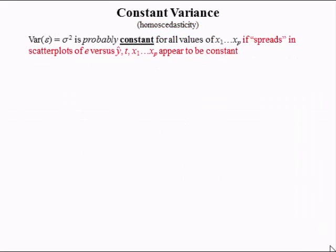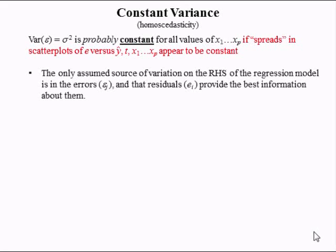The second assumption we have to test is that the variance of epsilon, which is equal to sigma squared, is constant for all values of the variables x1 to xp. This is probably true if the spreads and scatter plots of the residuals versus the predicted value of y, a time variable, or all the other variables appear to be constant. The only assumed source of variation on the right-hand side of the regression model is in the errors, and the residuals provide the best information for those errors.